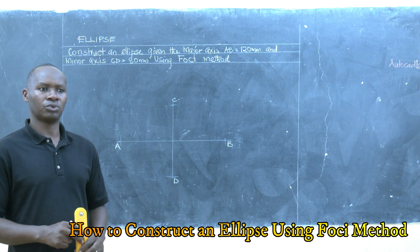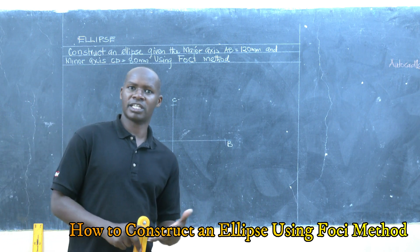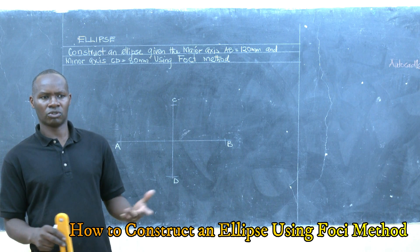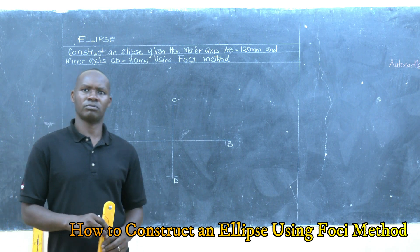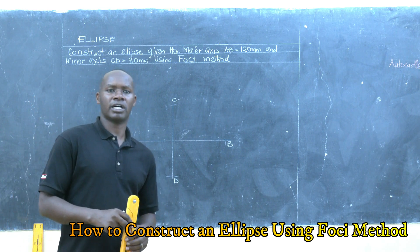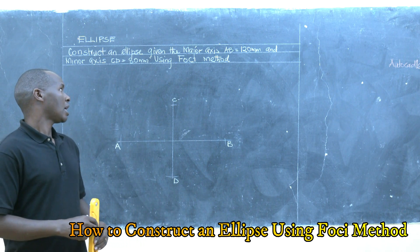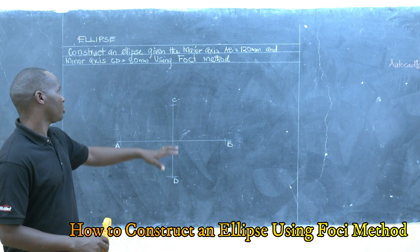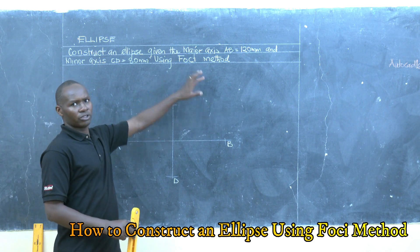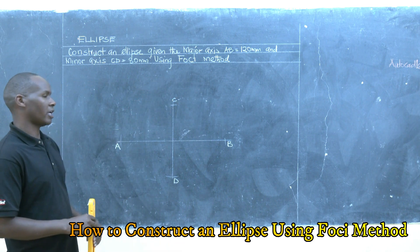Today I will be showing you how to construct an ellipse when you are given two conditions: the major diameter and the minor diameter, or what is also known as the major and minor axis. We will be using the FOSSI method to construct the ellipse.